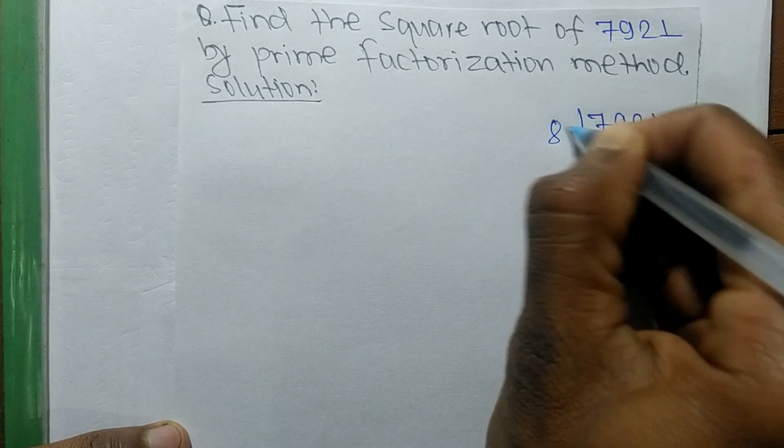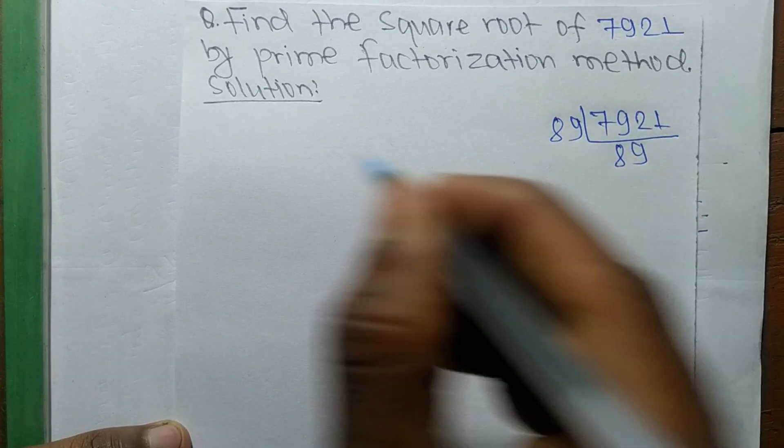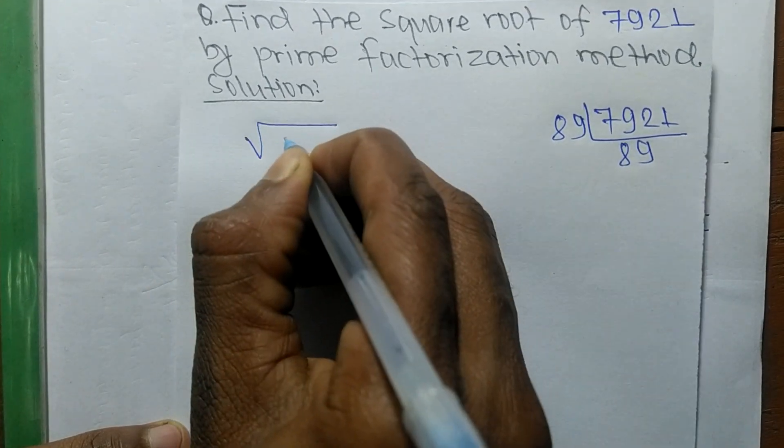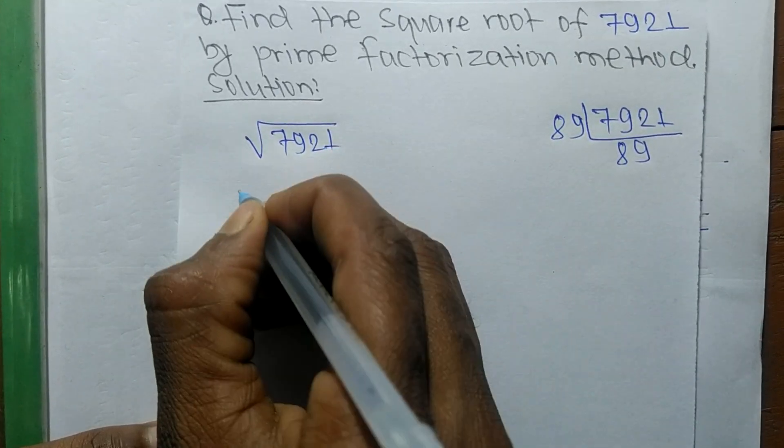Its prime factor is 89 times 89. So now we find out the square root of 7921.